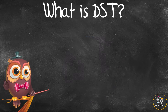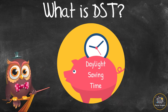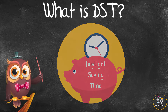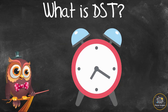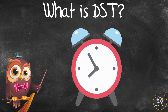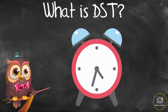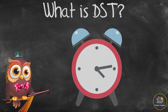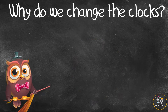What is DST? DST stands for Daylight Saving Time. This is the practice of setting the clocks forward by one hour during the summer months and back again in the autumn. Why do we change the clocks?